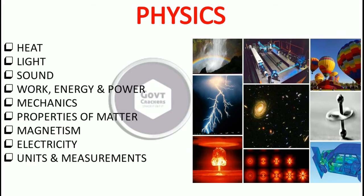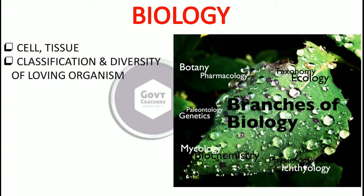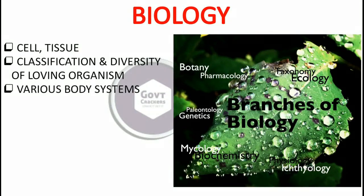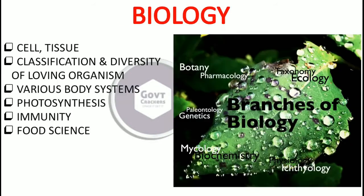For physics, you need to focus on these topics from NCERT and go through them in detail. Moving to the biology portion: it covers cell, tissue, classification, and diversity of living organisms. Then various body systems, photosynthesis — and at times the chemical equation of photosynthesis is also asked — and immunity, along with basic food science like which bacteria are involved.